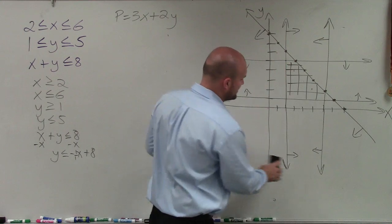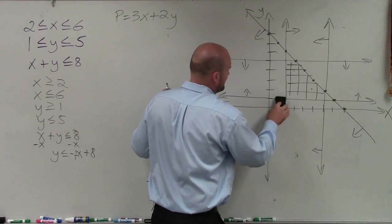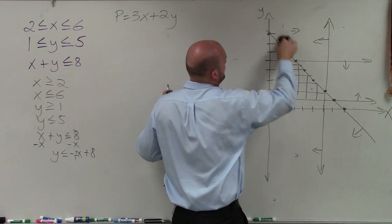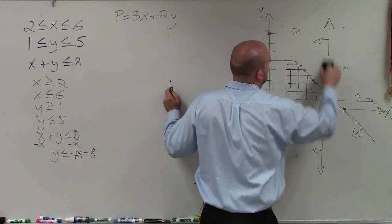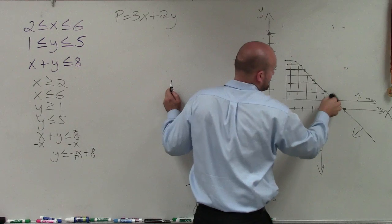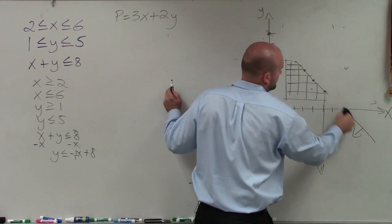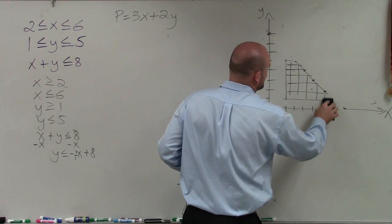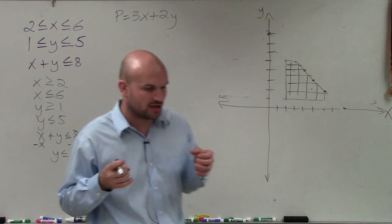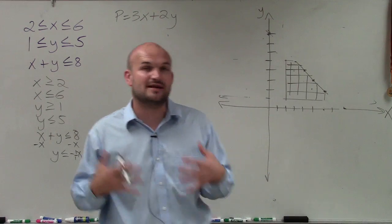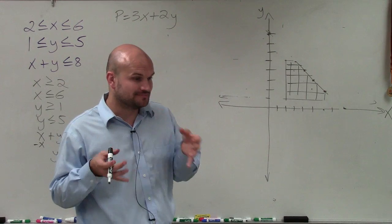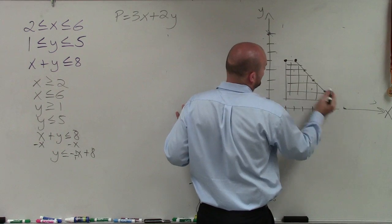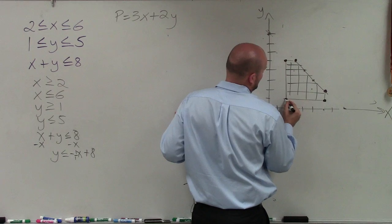Once you have that feasible region, we don't really need the rest of the lines — they're just getting in the way. Now I have this nice feasible region, and what I need to do is determine all of the vertices where any two constraint lines meet to create a vertex that satisfies all the constraints. I can identify one vertex here, two lines came together here, two lines came together here, here, and here — giving us five vertices.